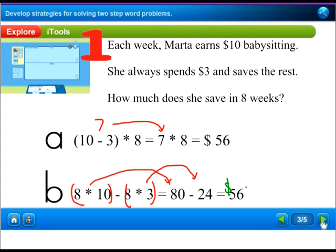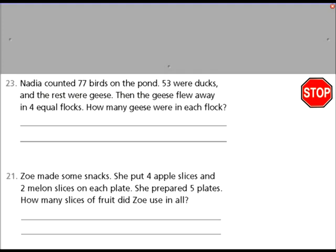We've done a couple problems together. Now let's see if you can do a couple problems on your own. There's two problems here. We'll do one together, and we'll let you do one. But you've got to figure out that each of these problems is a two-step word problem. I'm going to do Nadia's. Nadia counted 77 birds on the pond, 53 were ducks, and the rest were geese. So if I take the total number, 77, and subtract 53, I can find out how many geese there were. I need to find out how many were in each flock eventually, but let's find out how many were just geese. 7 minus 3 is 4, and 7 minus 5 is 2. 24 geese.